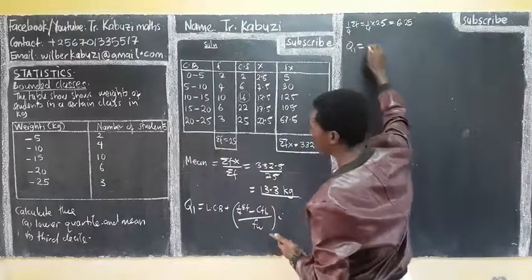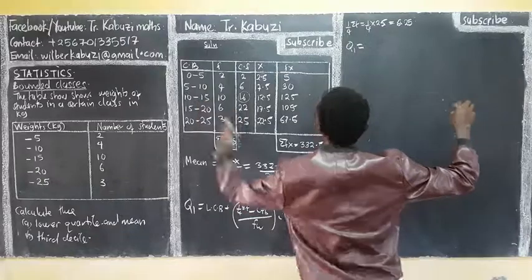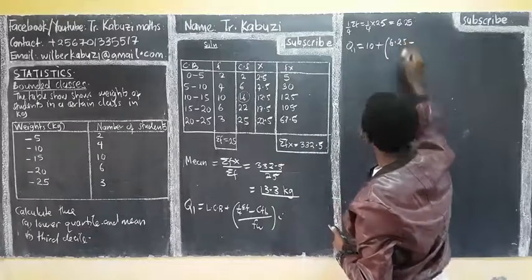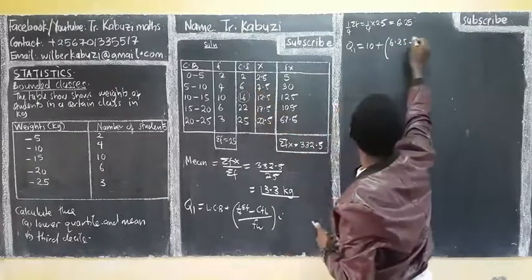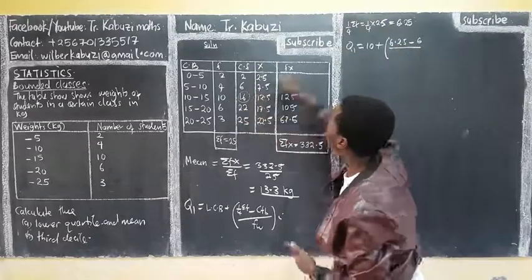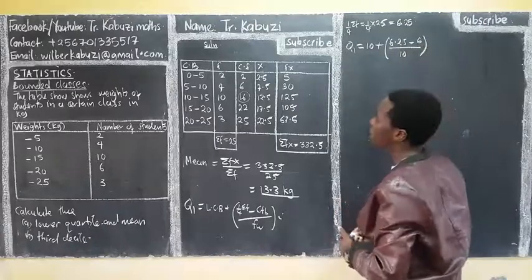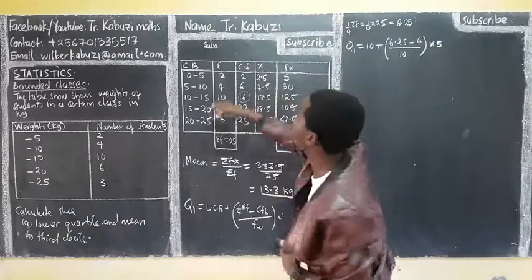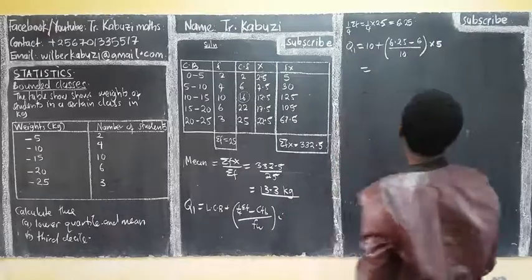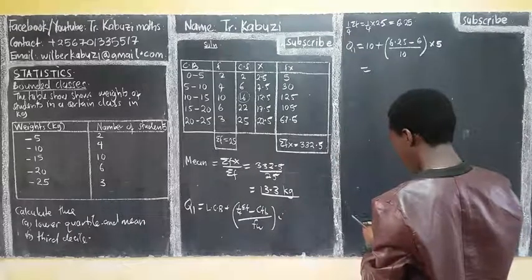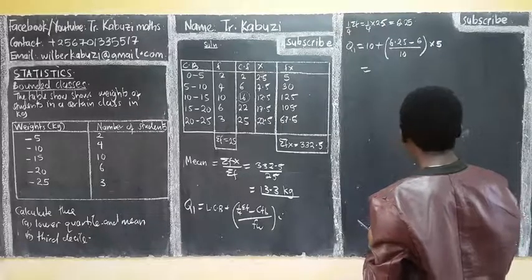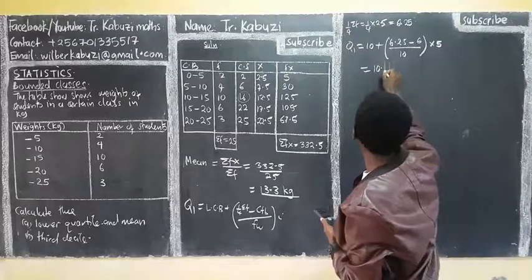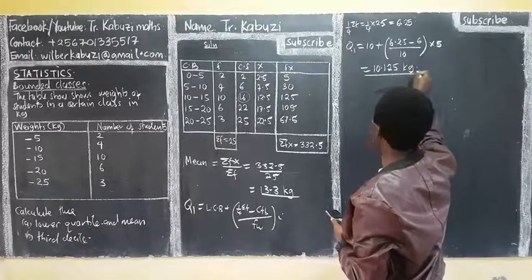So from there, now this one is going to be our lower class boundary. So our Q1 now becomes our lower class boundary. We have seen that it is this which is 10. Now plus this one has this. It is then 6.25 minus frequency before, the frequency before is 6, over the frequency within. The frequency within is 10. Then times the interval. The first interval is 5. When you get this minus this, because these are class boundaries. So from there, the answer we get is 10.125. You also put these kilograms.